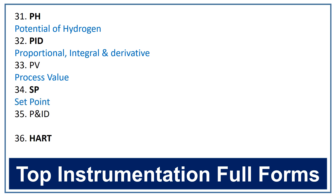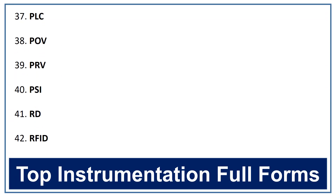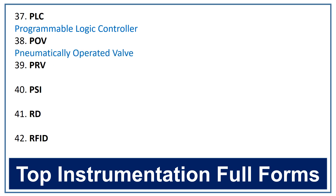P and ID. The full form of P and ID is piping and instrumentation diagram. HART. The full form of HART is highway addressable remote transducer. PLC. The full form of PLC is programmable logic controller. POV. The full form of POV is pneumatically operated valve.